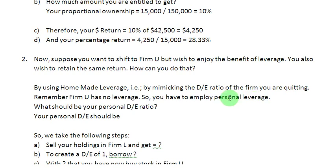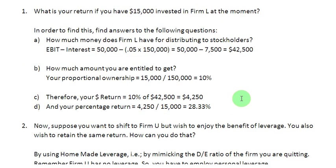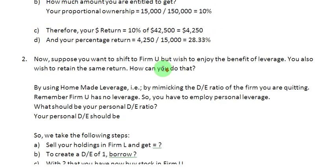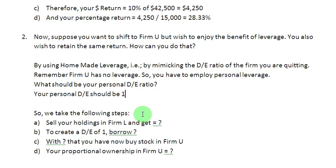The question is: how much personal leverage should be employed? You are quitting a firm with a debt-to-equity ratio of 1, so you create a personal debt-to-equity ratio of 1 for yourself — meaning half of your total money should be your own and half should be borrowed. Let us do that by taking a number of sequential steps.